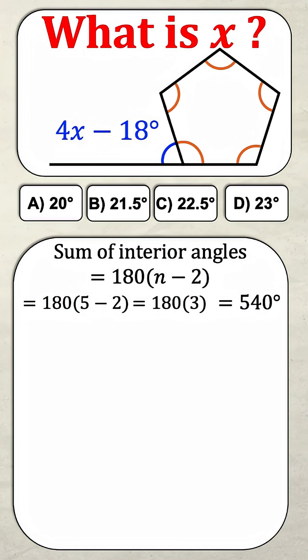This means that all those orange angles added up is 540 degrees, but I want to know how much one of those orange angles is. So I'm going to divide it by five, and that's going to give me one orange angle equals 108 degrees.